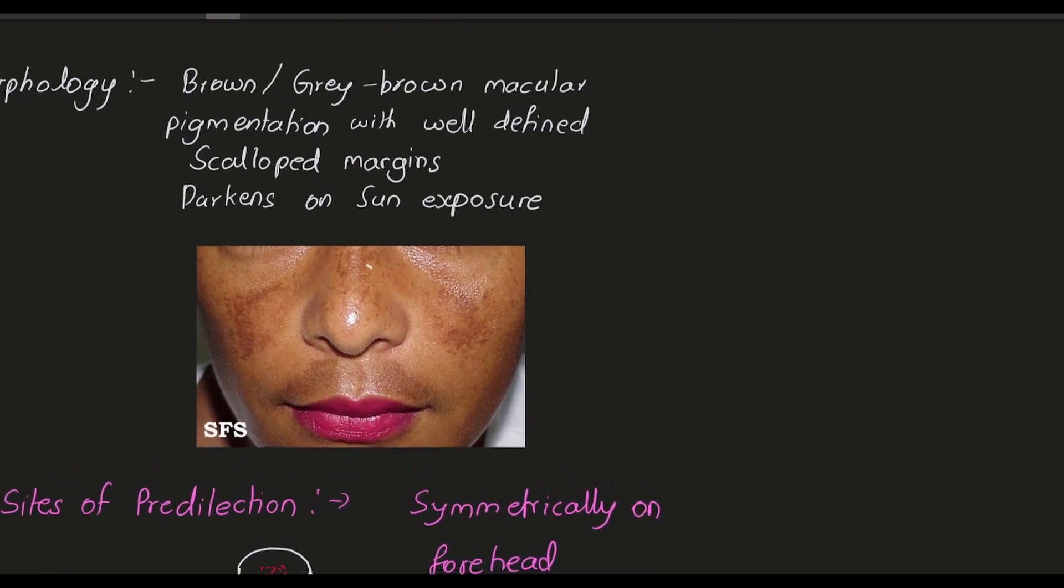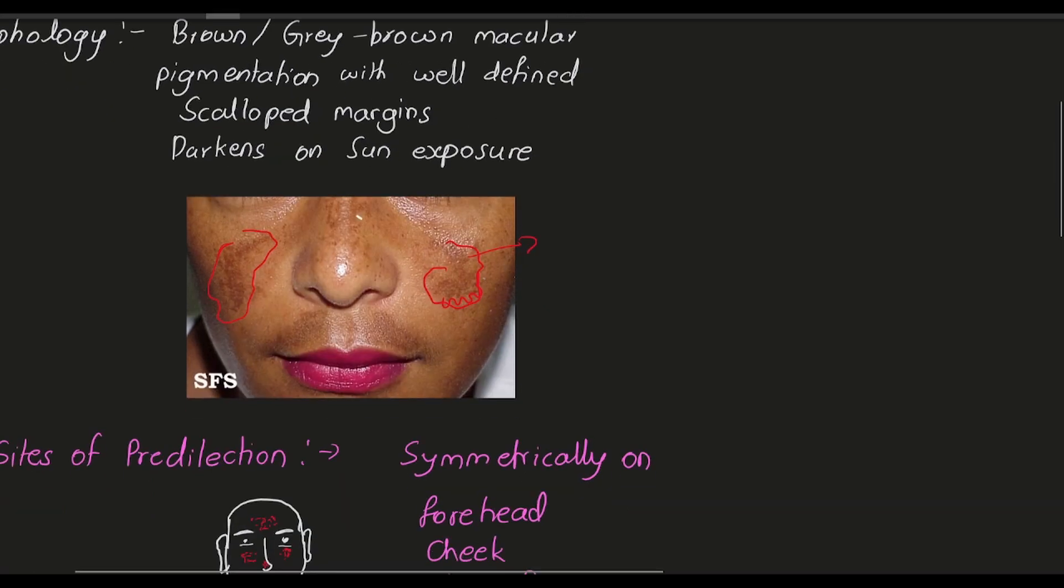Observe the figure carefully. It is a brown or gray-brown macular pigmentation. It is not raised - if you palpate the pigmented area, you won't appreciate it; you can only see the pigmented area. It has scalloped margins and darkens more on exposure to the sun.